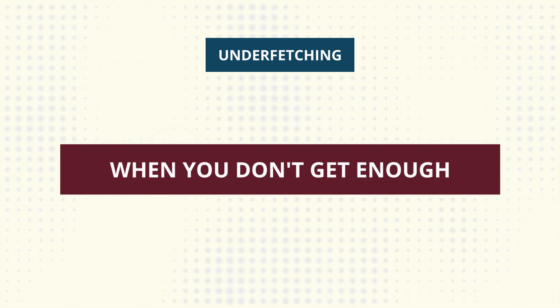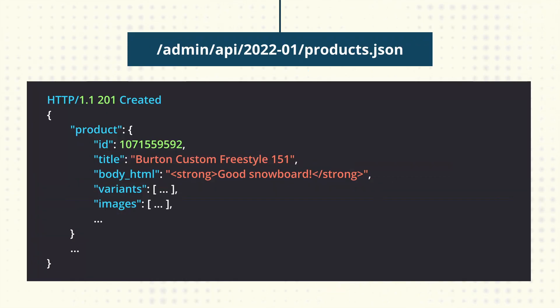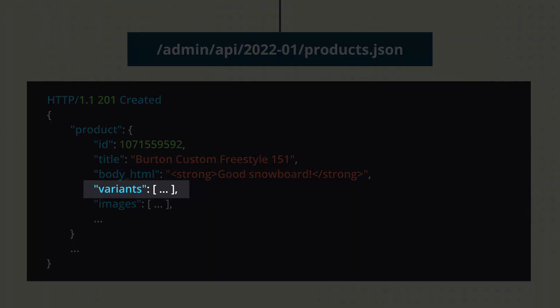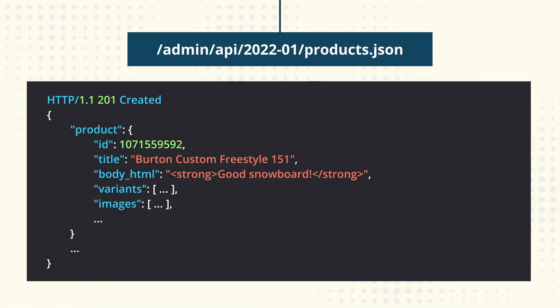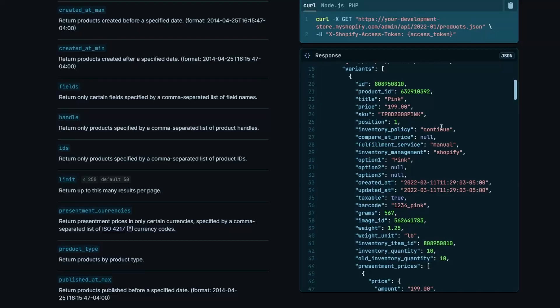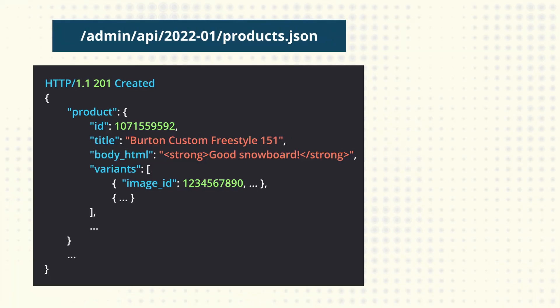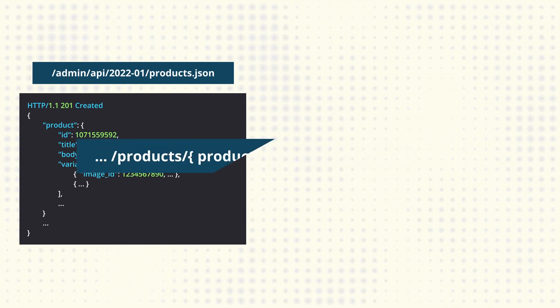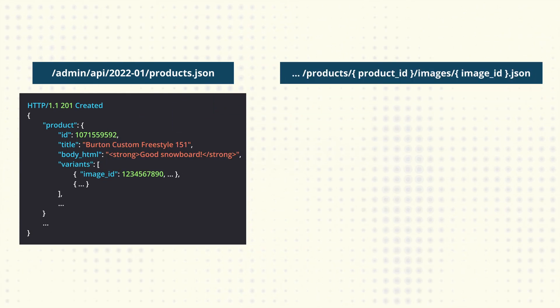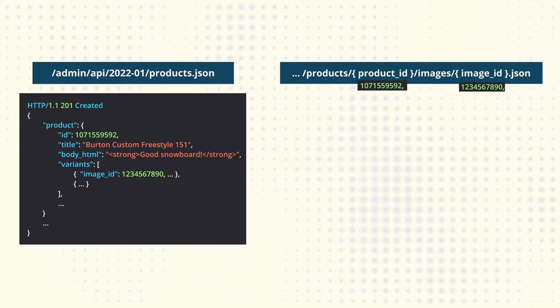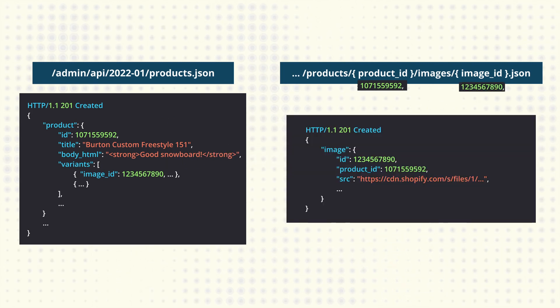In contrast to overfetching, underfetching is when you don't get enough data from a single request. Let's use the same API endpoint as an example. Say we want to get the images of the product variants. By using the product API endpoint, you can get the variants of the products. Unfortunately, there are no images field in the variants field, so you'd have to create another HTTP request to another API endpoint, passing the product ID as well as the image ID. You had to make two requests just to get the images — that's very inefficient. This is where GraphQL comes in.